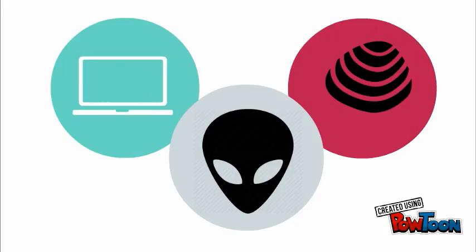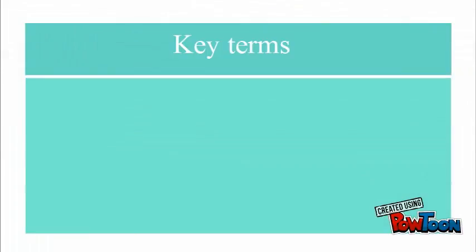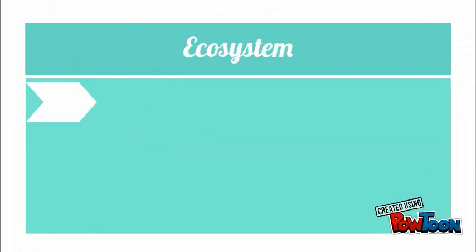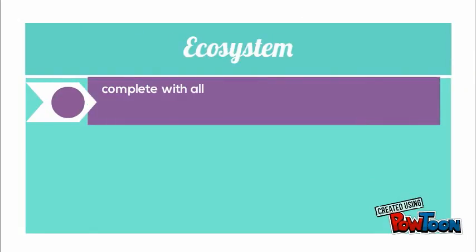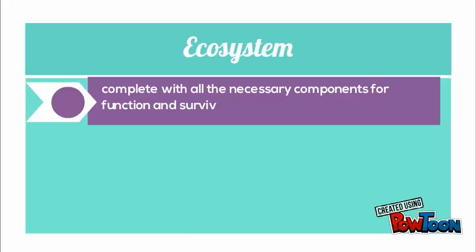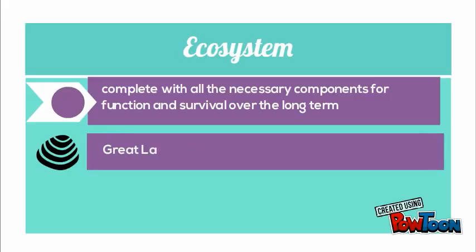To fully understand this metaphor we need to understand some terms. The first key term is ecosystem. An ecosystem is complete with all the necessary components for function and survival over the long term. For the zebra mussel, the Great Lakes is the ecosystem. For technology uses in schools, schools are the ecosystem.